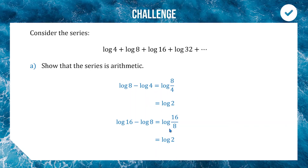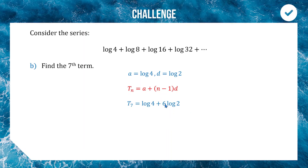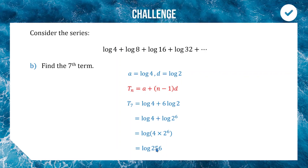For the 7th term: a = log 4, d = log 2, n = 7. Using the nth term formula: T_7 = log 4 + 6 log 2 = log 4 + log 2⁶. Combining the logs by multiplying subjects: log(4 × 2⁶) = log(4 × 64) = log 256. So the 7th term is log 256.